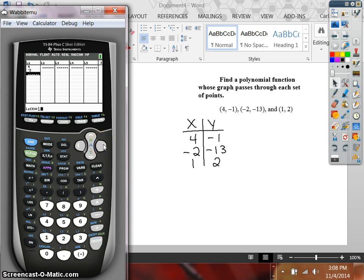Then I'm going to arrow over and put my Y's. For some reason it's not moving over. Let's see. Put my Y values in L2. So I'm going to have negative 1, negative 13, and make sure you hit enter between each one. So negative 13 and positive 2.